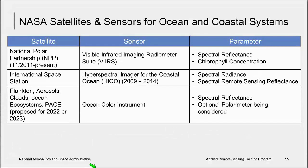Other ocean color satellites include the Suomi National Polar Partnership, or NPP, which hosts the Visible Infrared Imaging Radiometer Suite, or VIIRS. This sensor is used for spectral reflectance and to infer chlorophyll concentration. The International Space Station has also served as a platform for ocean color observation via the Hyperspectral Imager for the Coastal Ocean, or HICO, which rode aboard the ISS for five years from 2009 to 2014. Finally, a satellite and sensor not yet launched but under development is the Plankton, Aerosols, Clouds, Ocean Ecosystems, or PACE, a proposed hyperspectral sensor scheduled to launch sometime in 2022 or 2023.